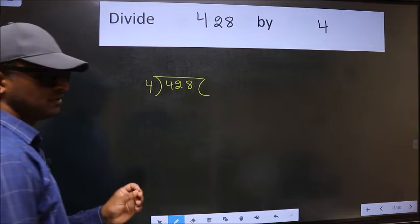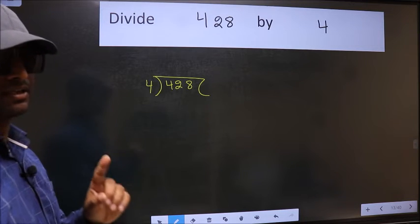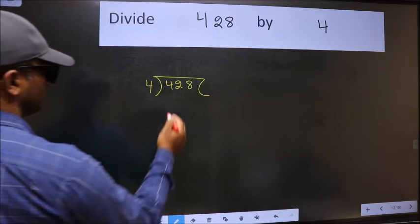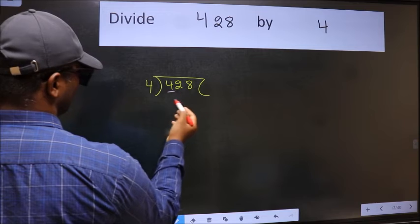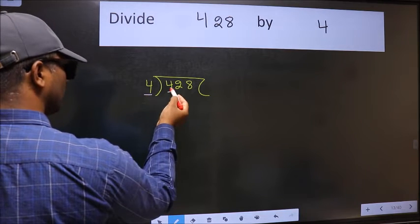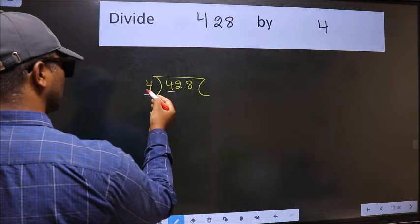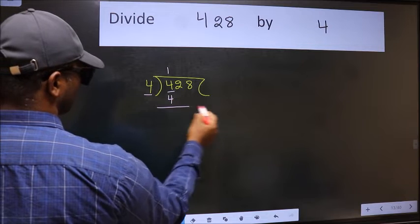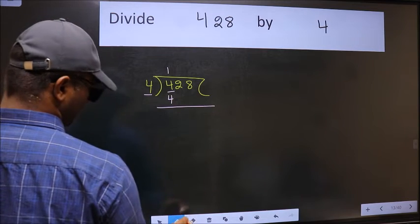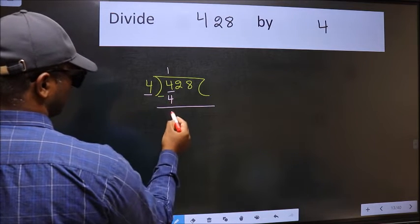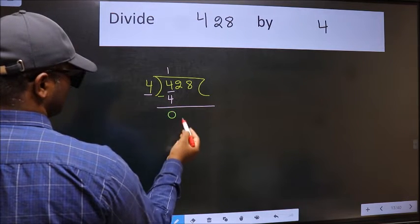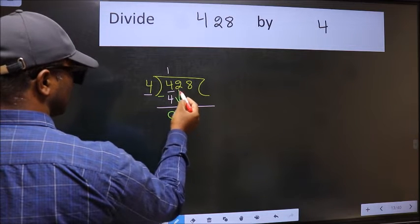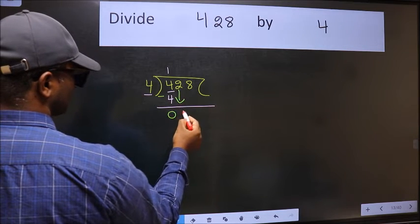This is your step one. Here we have four, and here also four. When do we get four in the four table? Four ones are four. Now we should subtract — we get zero. After this, bring down the beside number.